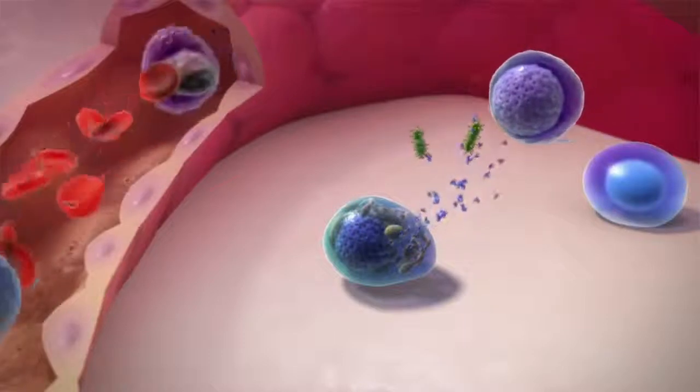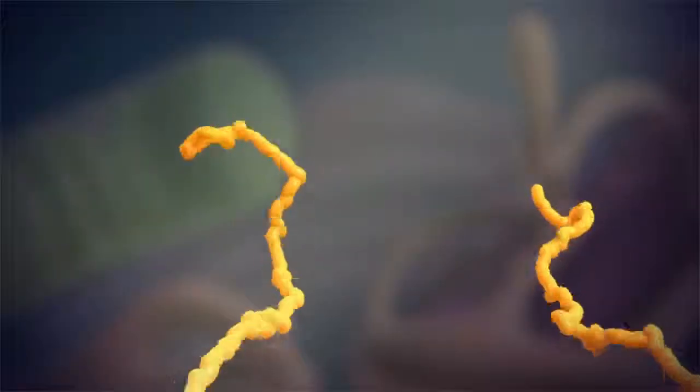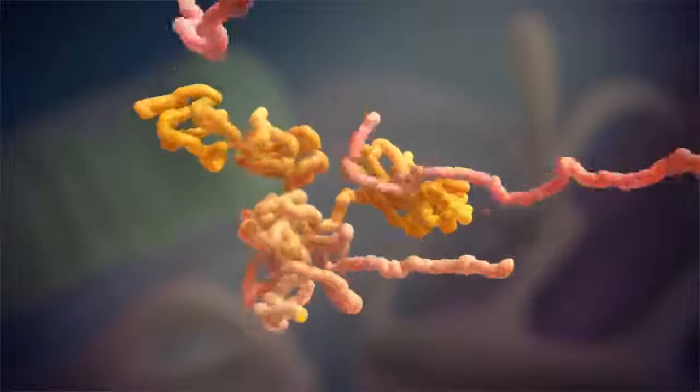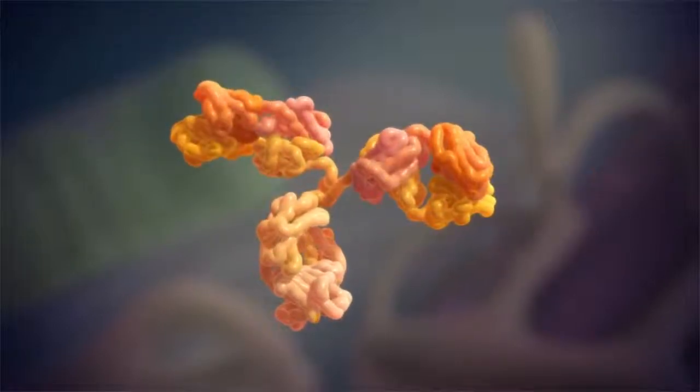Plasma cells make antibodies to help fight infection. Each antibody is made up of four protein chains, two heavy chains and two light chains, which attach to each other to form the complete antibody.